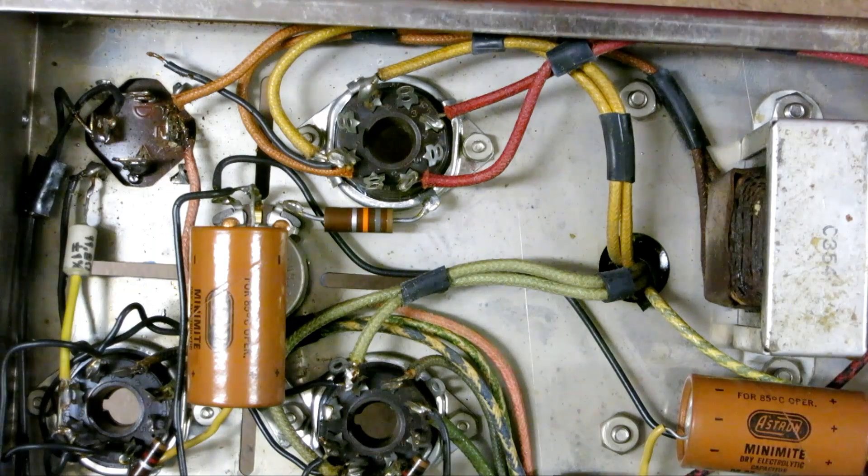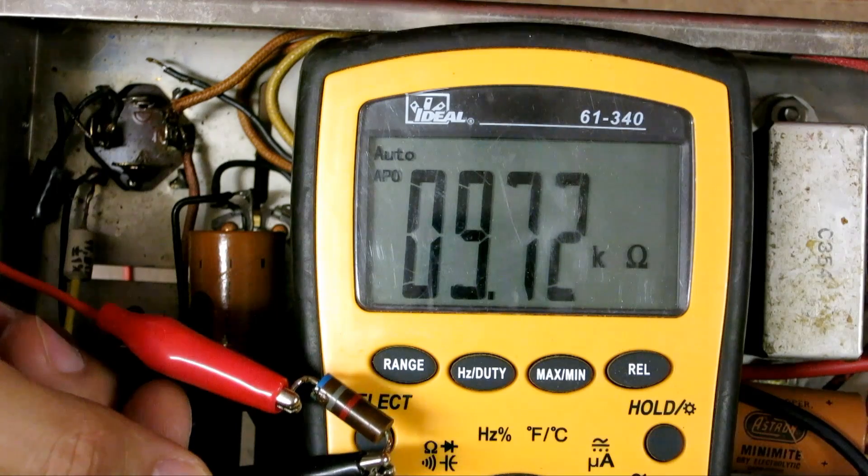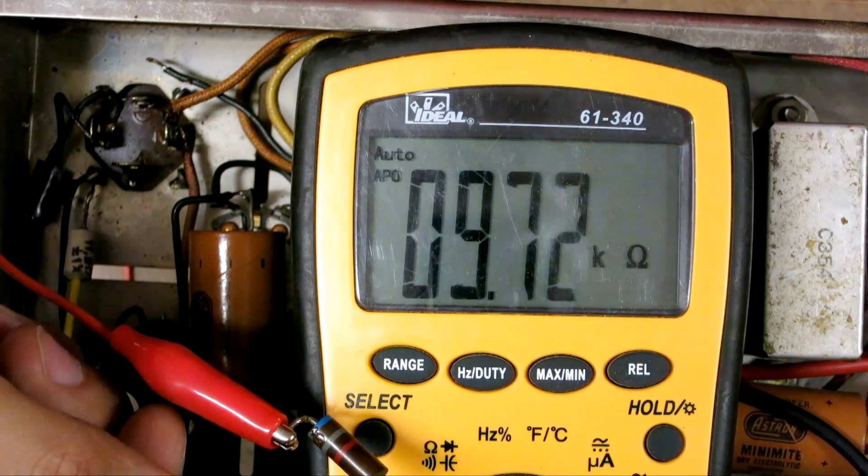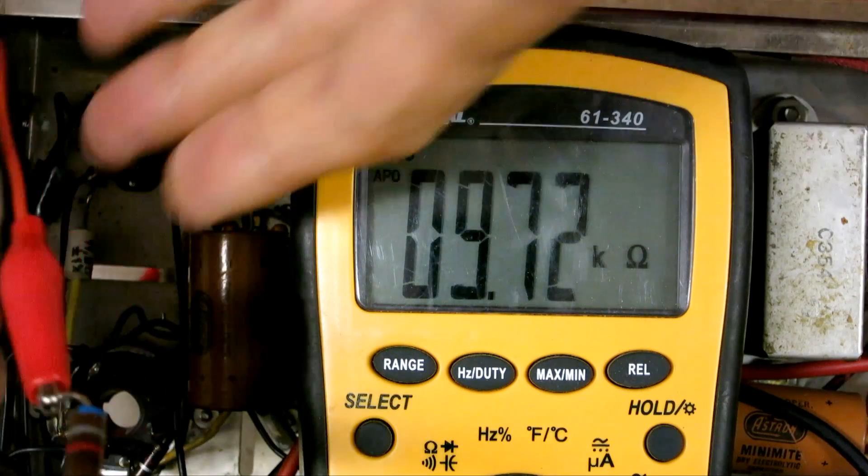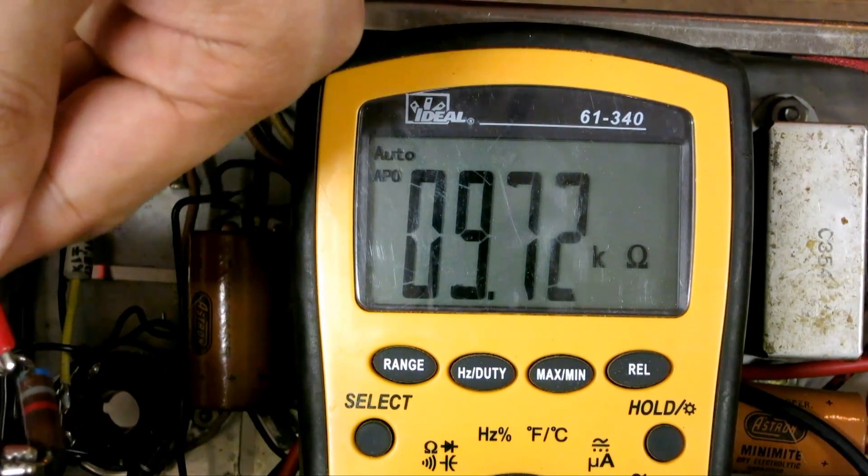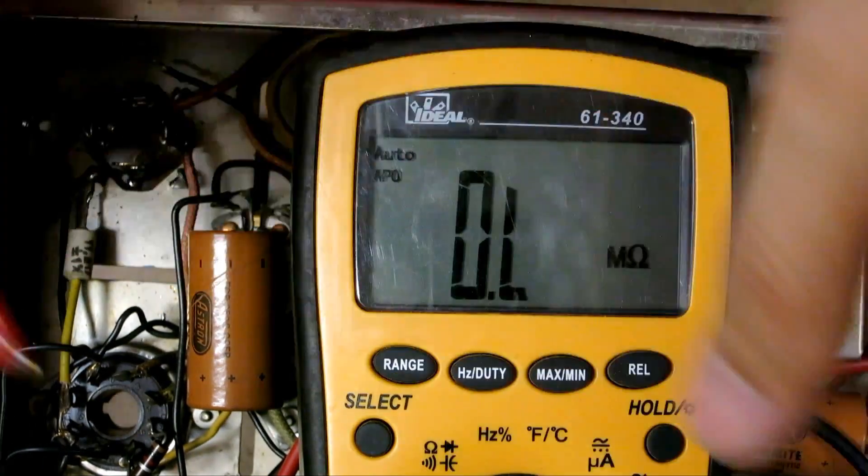So I'm measuring the 6.8K ohm. As you can see it's almost about 10K ohms. These are the first signs that they're failing is that when they start increasing in resistance. So we need to replace that.